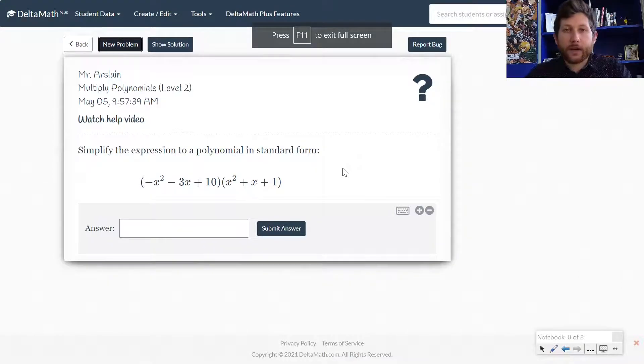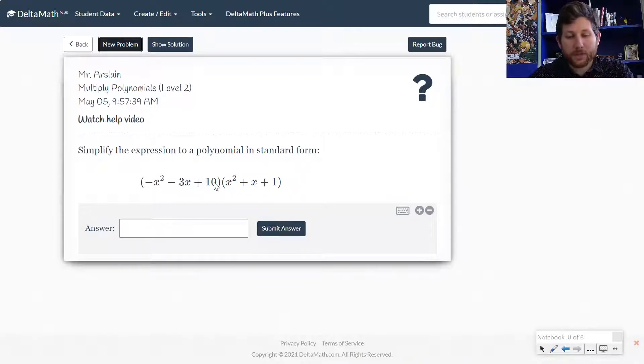All right, so level 2 here. Notice we've got two trinomials I'm multiplying together. So in this case, once again, I'm just going to take this first term, multiply it by all terms. Take the second term, multiply it by all of the terms in the second polynomial, and the same for the third.